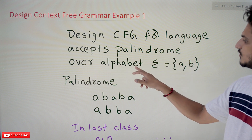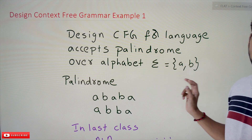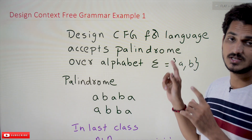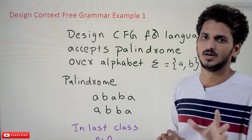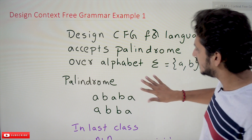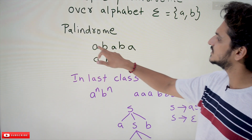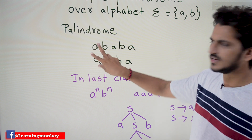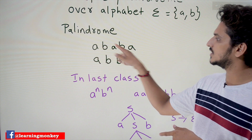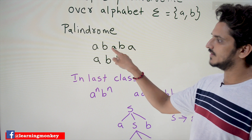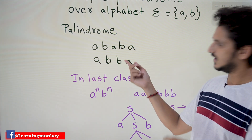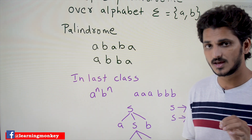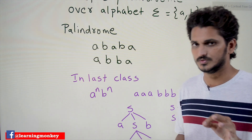The alphabet Sigma is equal to {a, b}. This language is going to accept strings that are palindromes. Let's understand what palindromes means. A B A B A — if you reverse this string you get the same one. A B B A — if you reverse it you get the same thing. These are palindromes; we have to accept strings that contain palindromes.